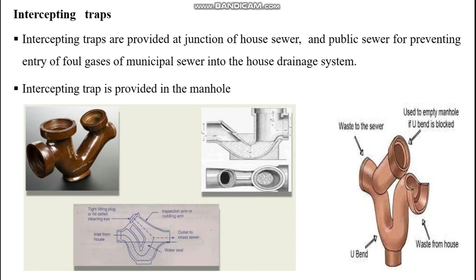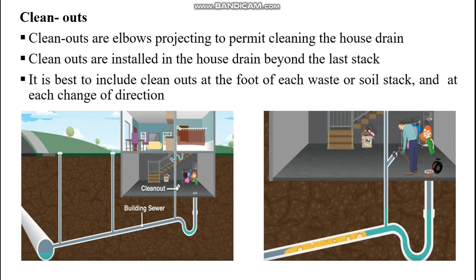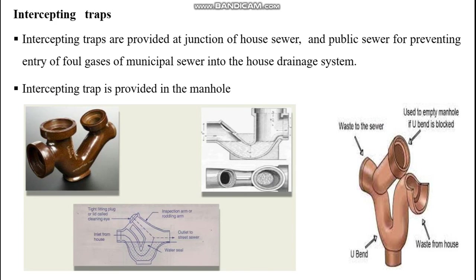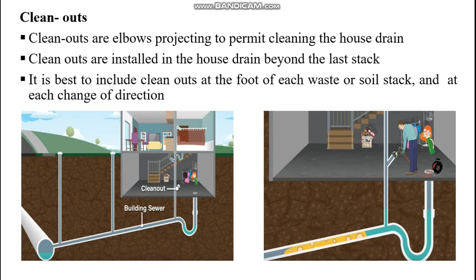Intercepting traps are provided at the junction of the house sewer and public sewer for preventing the entry of foul gases from the municipal sewer into the house drainage system. The intercepting trap is provided in the manhole. Clean outs are elbows projecting to permit cleaning of the house drain. Clean outs are installed in the house drain beyond the last stack, and it is best to include clean outs at the foot of each waste or soil stack and at each change of direction.